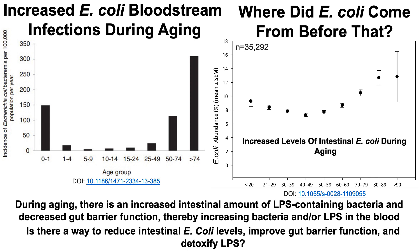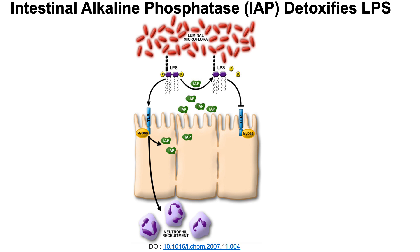So is there a way to reduce intestinal E. coli levels, improve gut barrier function, and also detoxify LPS? The end goal is reducing LPS so that we can reduce CD38 expression to maximize NAD and boost healthspan and lifespan. I'm going to introduce a protein here — intestinal alkaline phosphatase, or IAP.